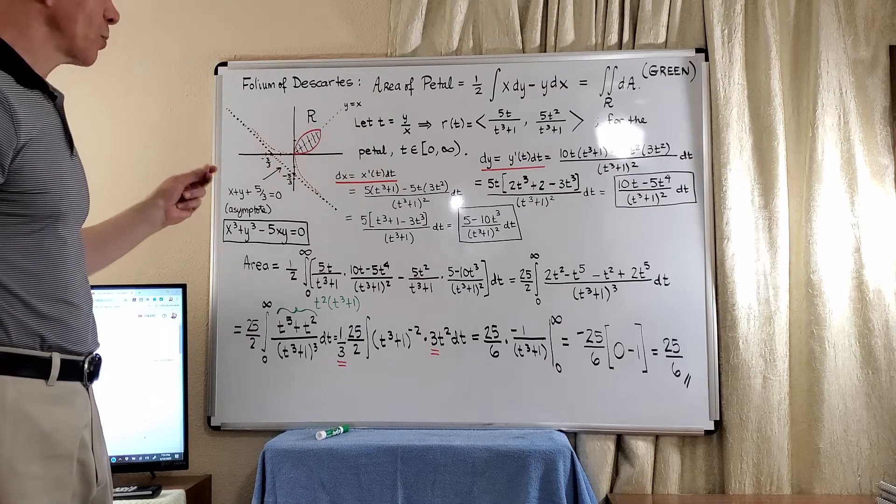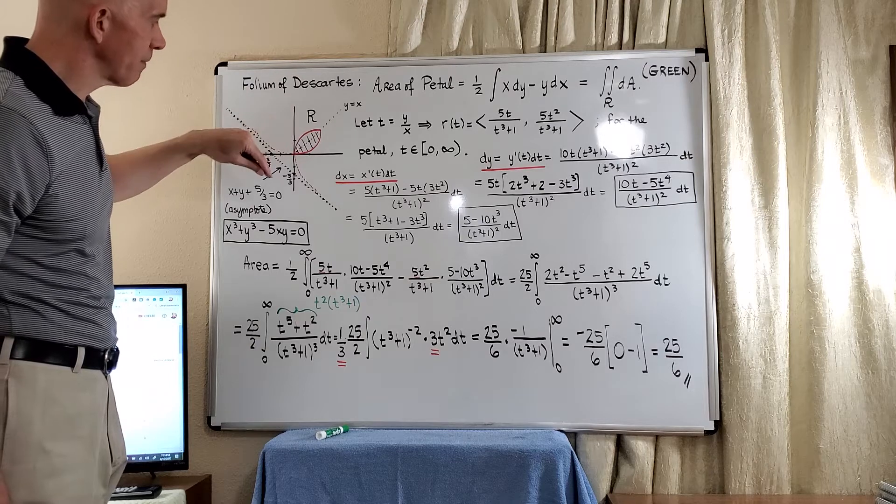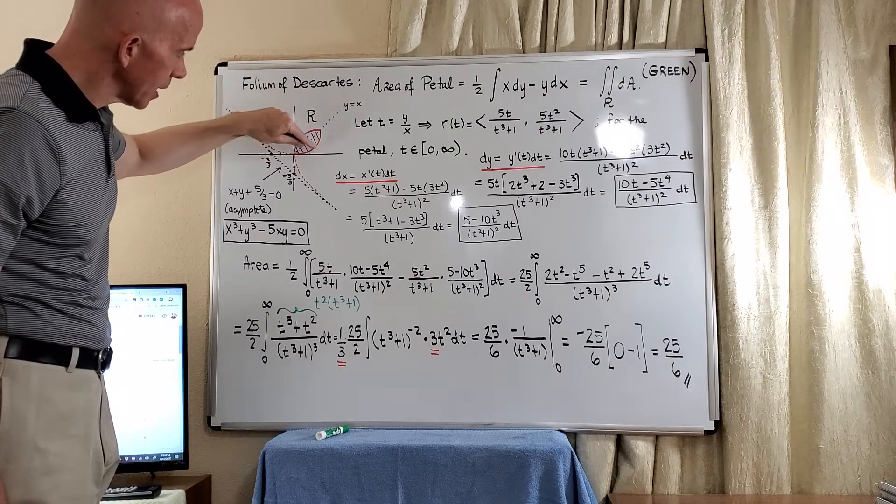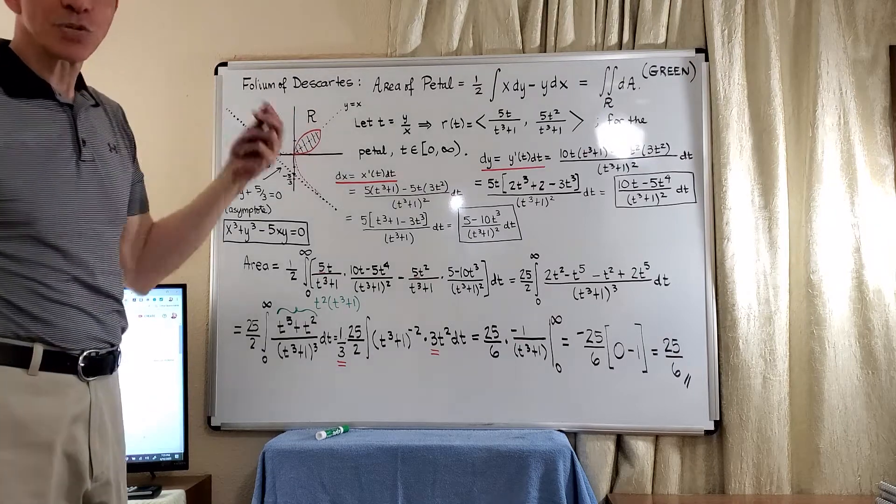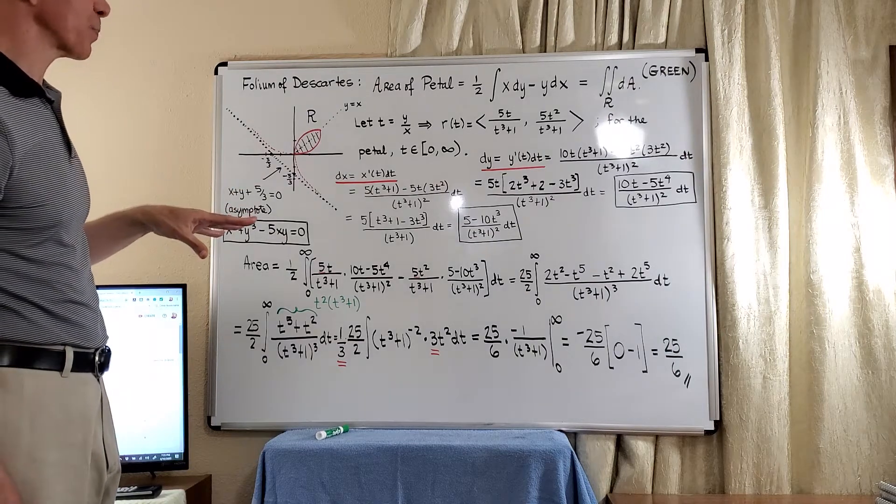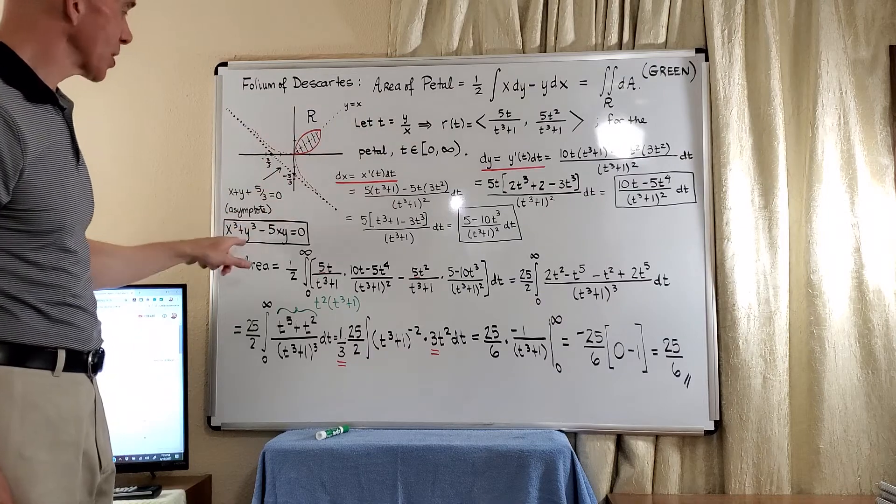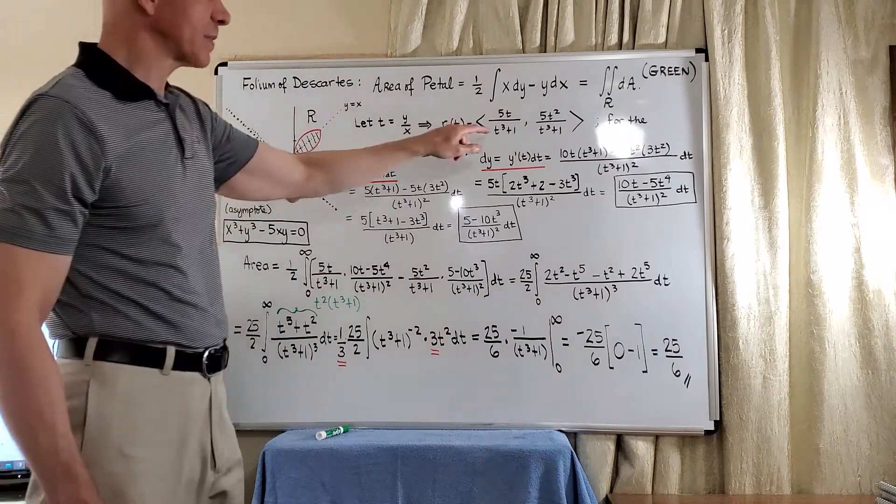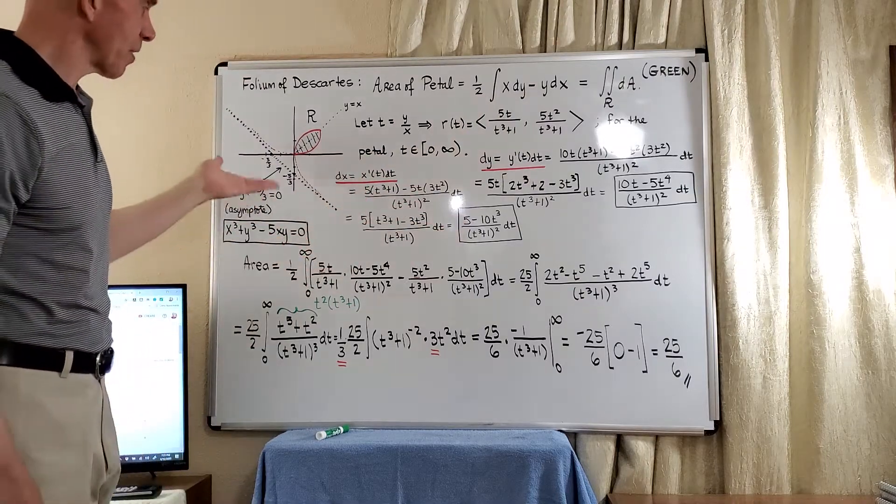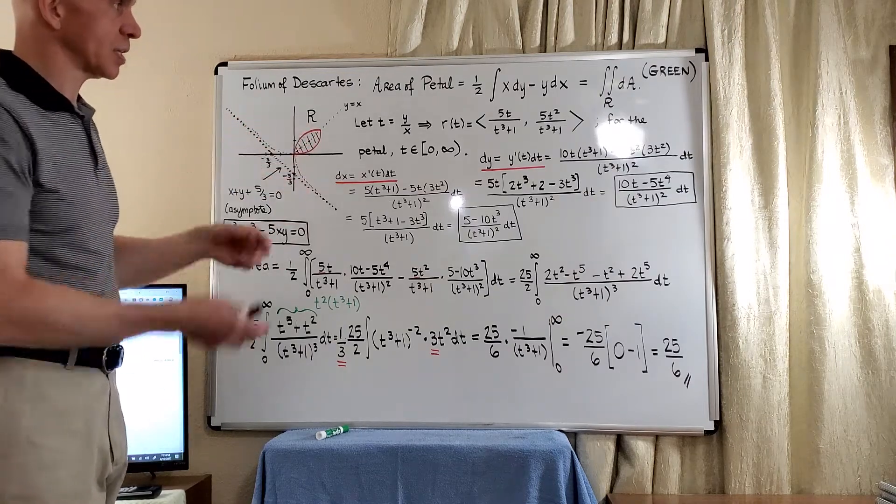In order to actually solve this problem, the actual petal of the folium is this shaded region. This petal encloses a region that we're interested in determining area. You can let t equal y over x and actually replace x and y with functions of t. This is how the problem is presented to you, but I thought you'd like to see how the Calculus 1 is actually an introduction to this problem.